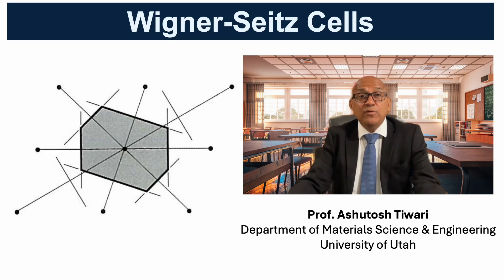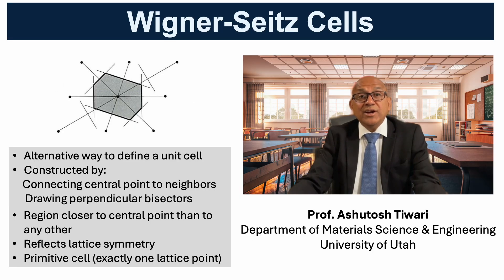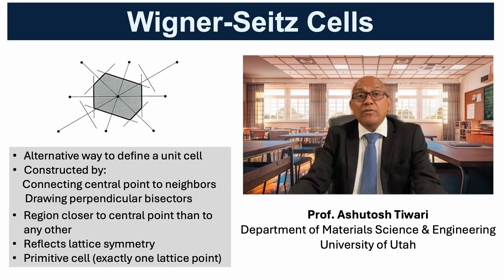Let me introduce another powerful way to represent a unit cell, called the Wigner-Seitz cell. To construct the Wigner-Seitz cell, we connect a central lattice point to all of its nearest neighbors. Then, for each connecting line, we draw a perpendicular bisector. The region of space enclosed by these bisectors is the Wigner-Seitz cell. In simple terms, it is the set of all points that are closer to the chosen lattice point than to any other.